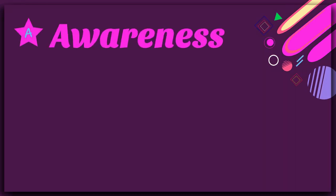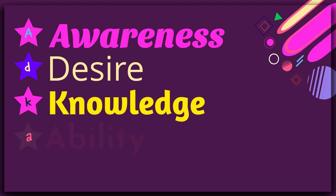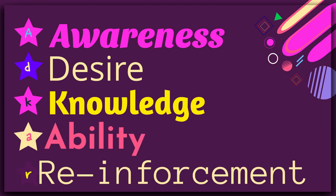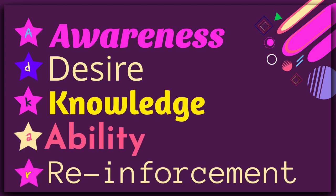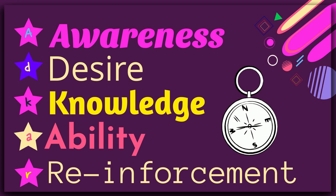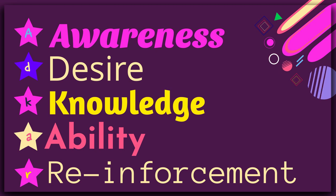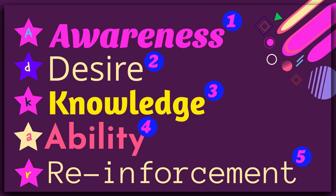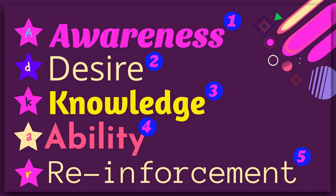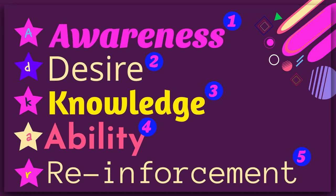The five milestones are: Awareness, Desire, Knowledge, Ability, and Reinforcement. The model allows leaders and change management teams to navigate successfully through complex and difficult change processes. It is important to note that the goals and outcomes defined by the ADKAR model are sequential and cumulative and should be achieved in the given order, starting with Awareness.